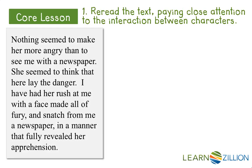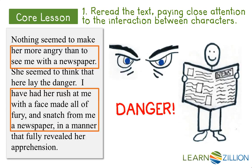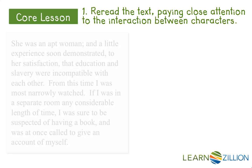Here's another example of how Mistress Hugh interacted with Frederick. She got upset when she saw him with a newspaper — her face would look really angry and she would rush to grab the newspaper away from him. When she saw Frederick with a newspaper she would get instantly angry and snatch it away. For some reason she seemed to think it was dangerous for him to read the paper.